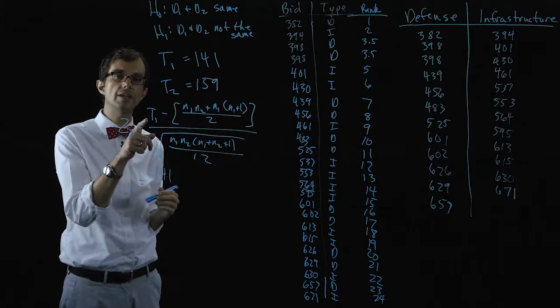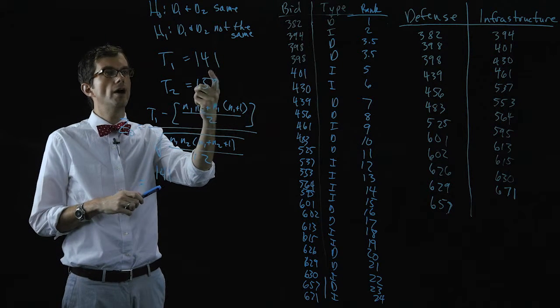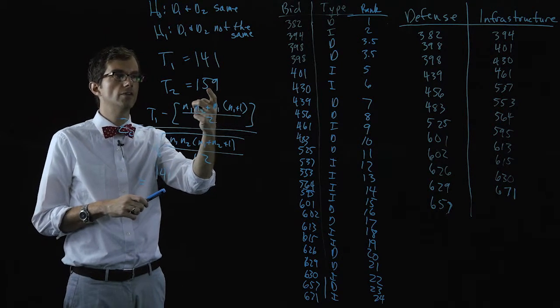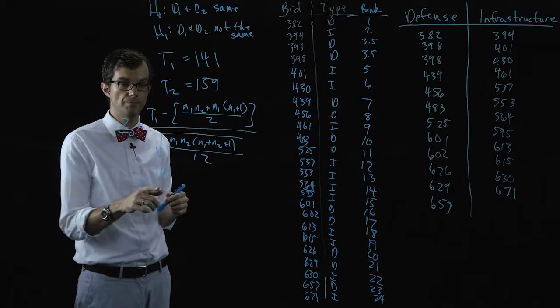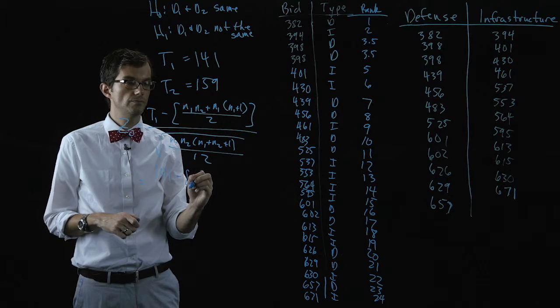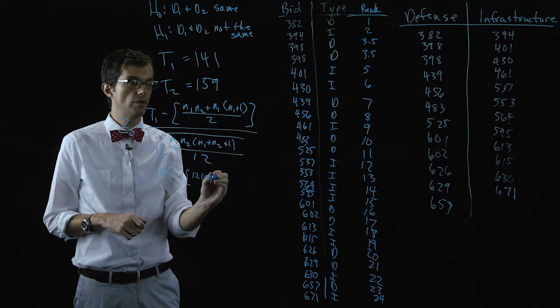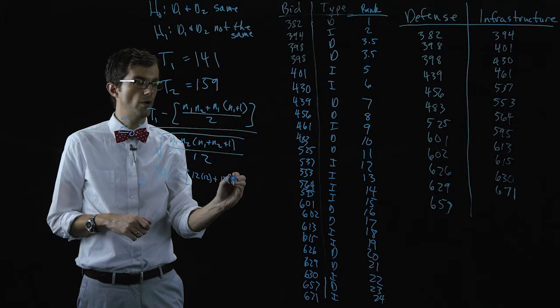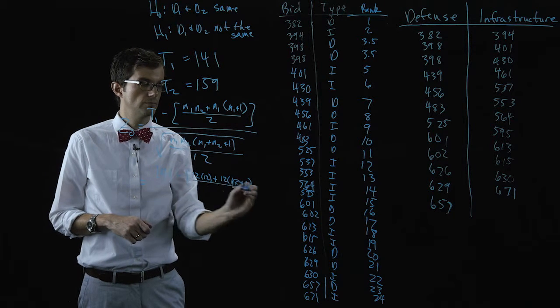And so why do we only have t-one in the test statistic? Well if you know one you know the other because the sum of the two ranks is a known quantity. So we can just use t-one.